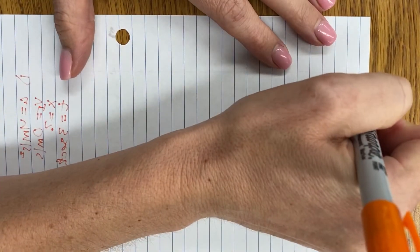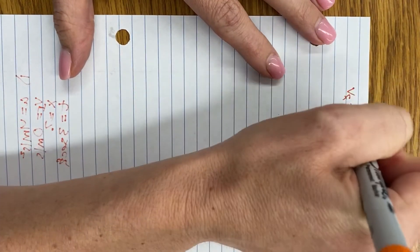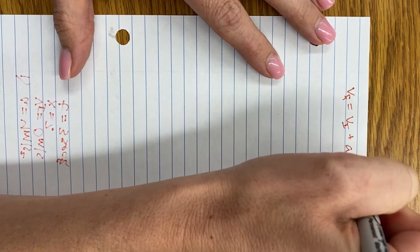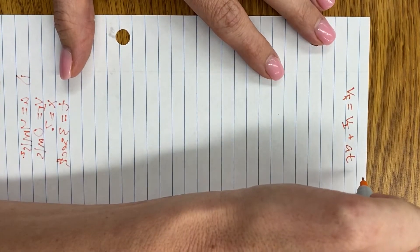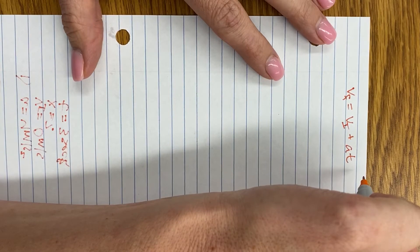All right, the other equation we're going to be working with today is Vf is equal to Vi plus At. This is our average acceleration equation rearranged.